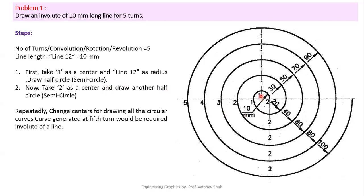Looking at the figure on the right hand side, here you can see point 1 and point 2 — this is our line 1-2. First, take point 1 as center with radius 1 to 2, and draw one semicircle. This gives a 180 degree rotation, that means a half turn.